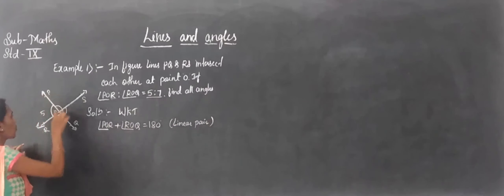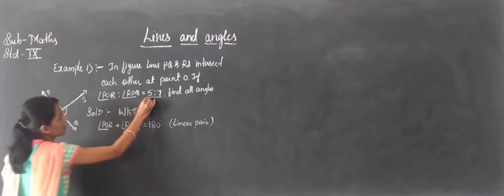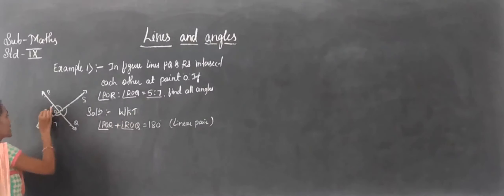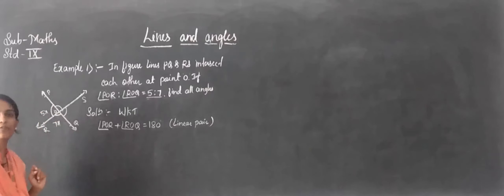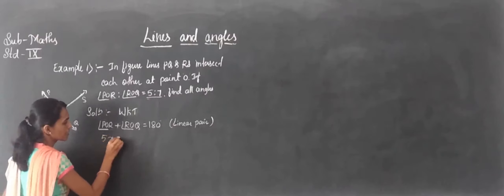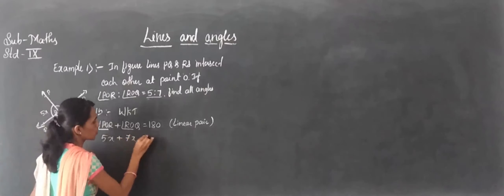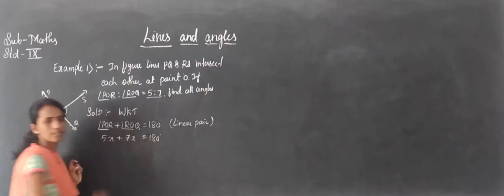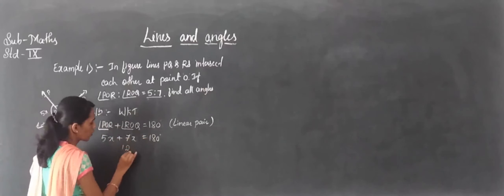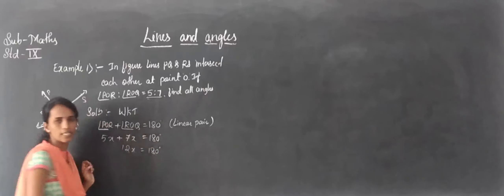Angle POR is equal to 5 parts of the ratio, so we take it as 5x. Angle ROQ is 7x. So 5x plus 7x equals 180 degrees.